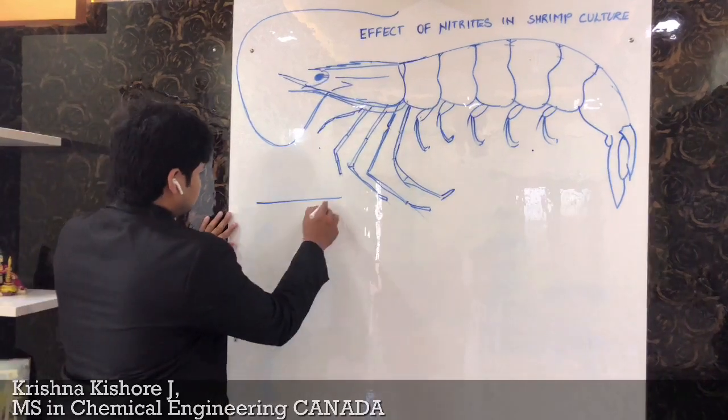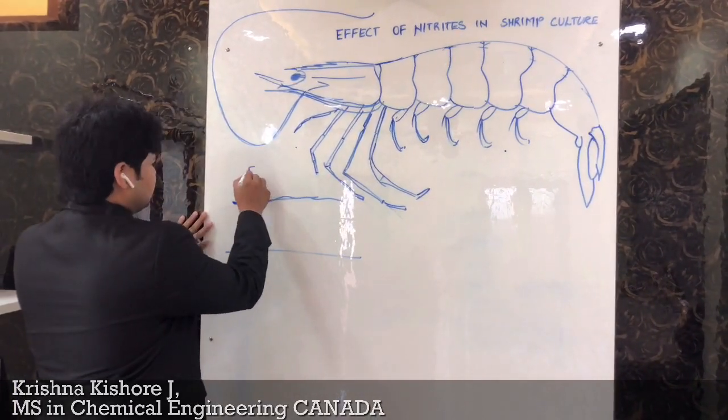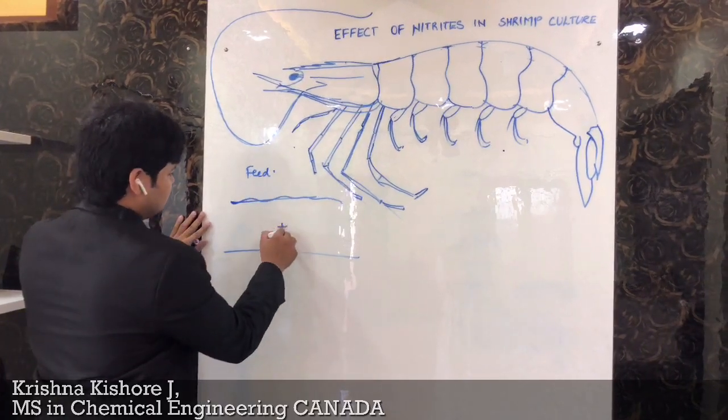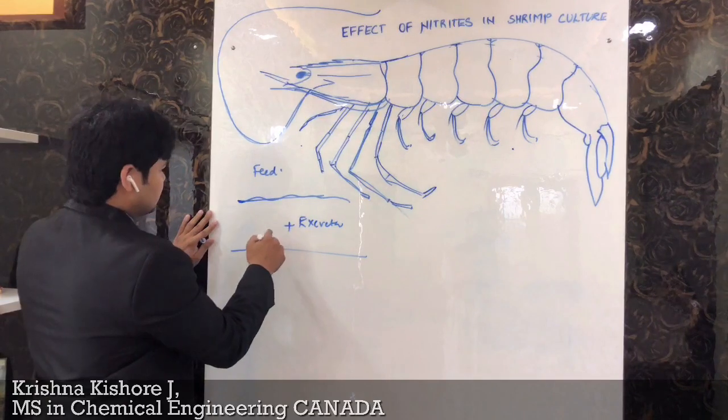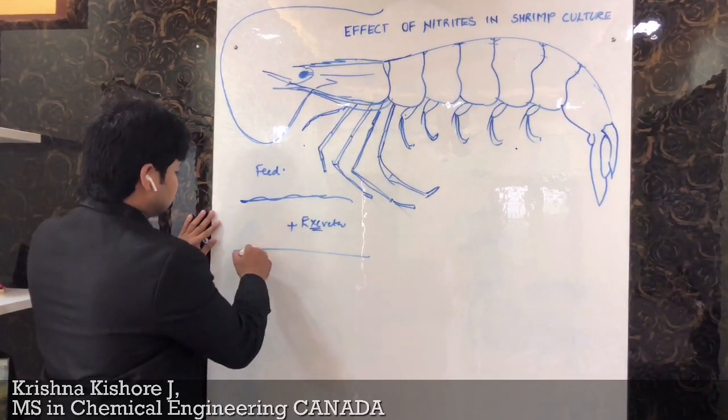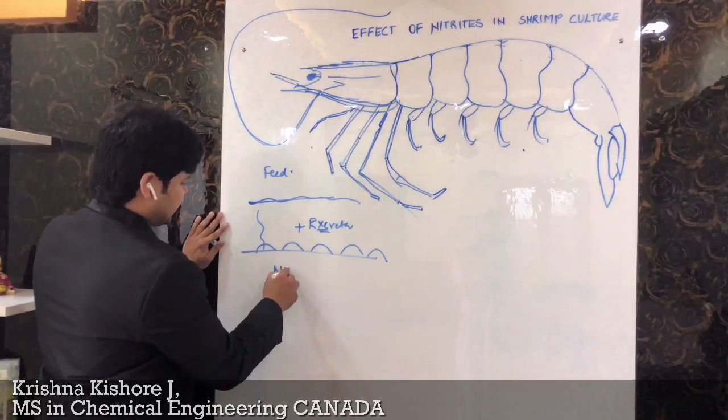When you give the nitrogenous source to our pond in the form of feed or in the form of excreta, all these decomposed wasted feed and excreta turns into organic sludge which produces the ammonia and ammonium ions.